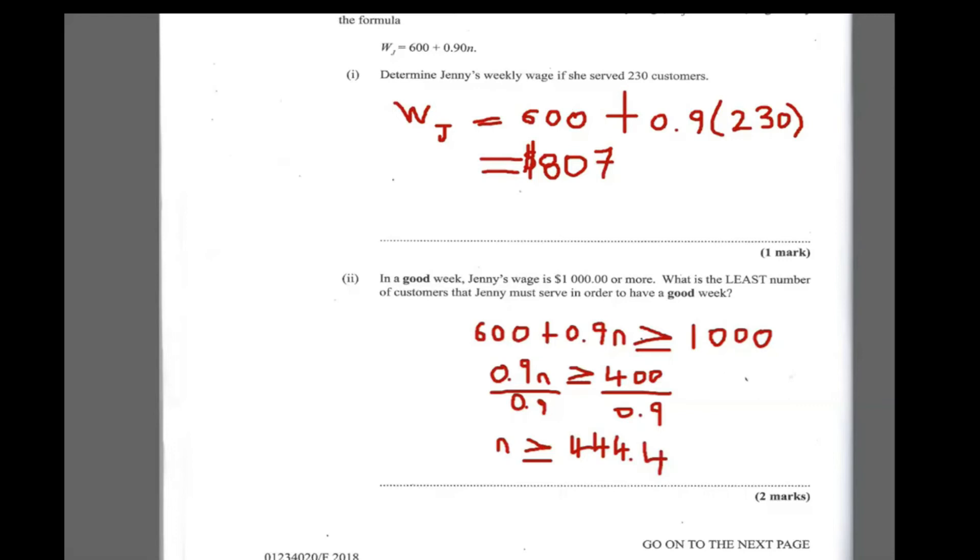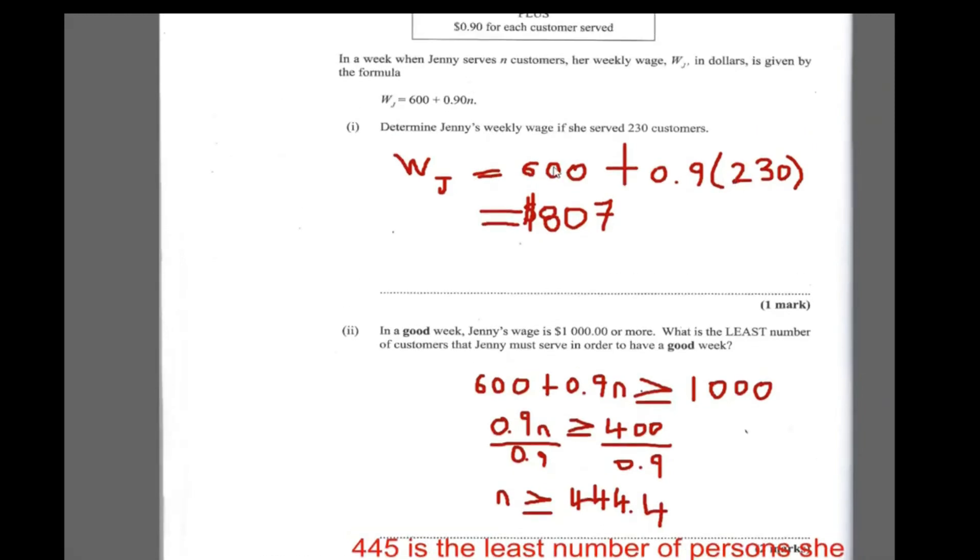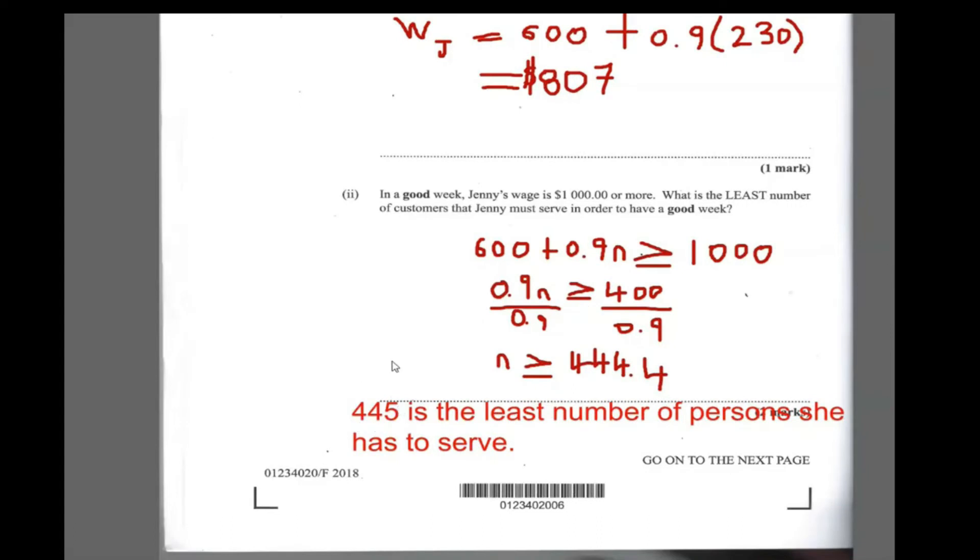So what we're saying is 445 is the least number of persons she has to serve, 445, and it cannot be 444. Look why it cannot be 444. If it is 444, her money is going to still be under $1,000. Put in 444 here, you will get $600 plus 0.9 times 444, and that's $999.60. So it has to be 445 in order for her to make more than $1,000. That's the least number of persons she has to serve. Easy question. Soft.